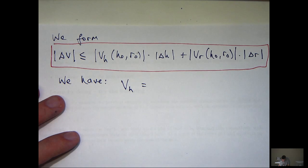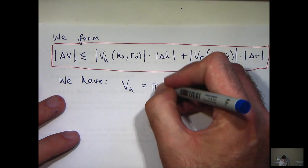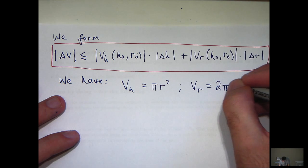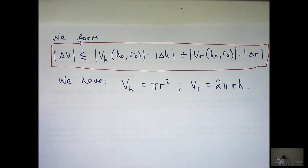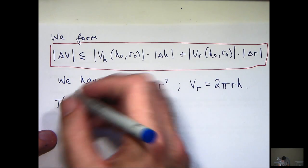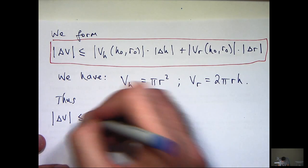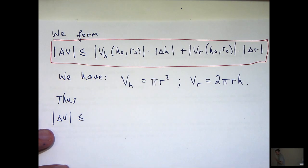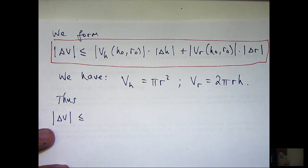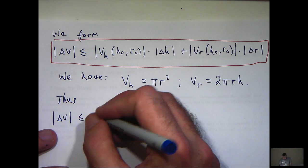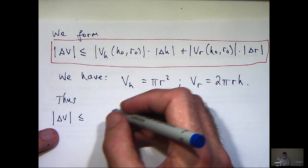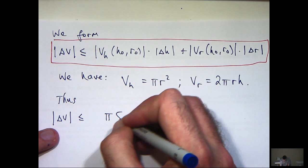Let's calculate these partial derivatives. V sub h, we're going to have the following. We want to evaluate this at h equals 12, r equals 5.